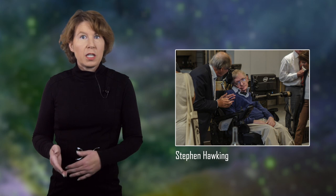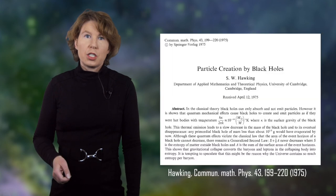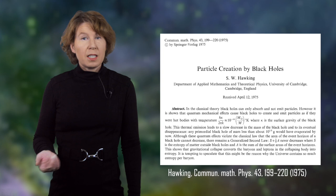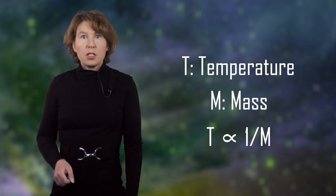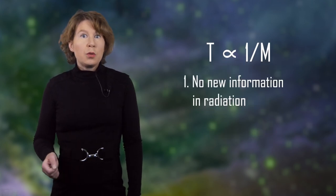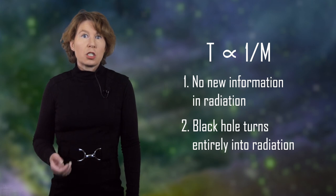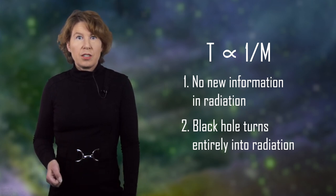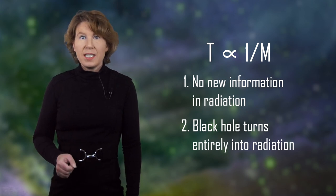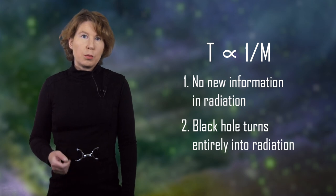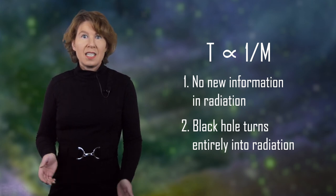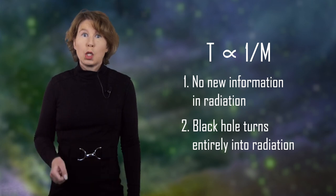But then along came Stephen Hawking. Hawking showed in the early 1970s that actually black holes don't just sit there forever — they emit radiation, which is now called Hawking radiation. This radiation is thermal, which means it's random except for its temperature. And the temperature is inversely proportional to the mass of the black hole. This means two things: first, there's no new information which comes out in the Hawking radiation. And second, as the black hole radiates, its mass shrinks — because E equals mc squared, and energy is conserved — and that means the black hole temperature increases as it evaporates. As a consequence, the evaporation of a black hole speeds up. Eventually the black hole is gone, and all you have left is this thermal radiation, which contains no information.